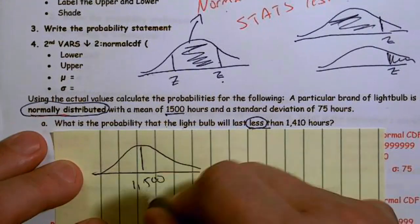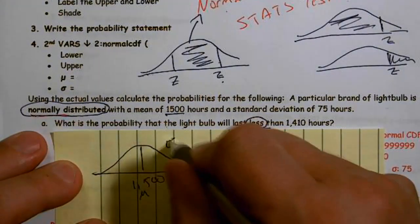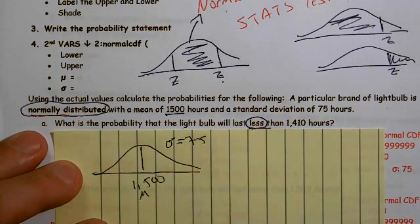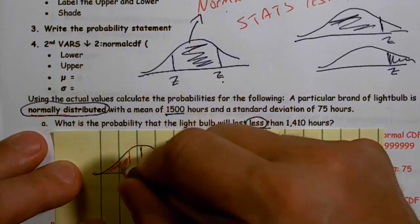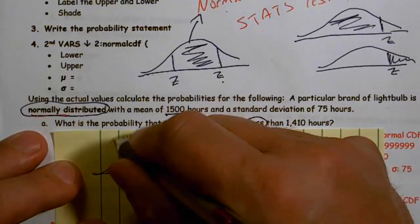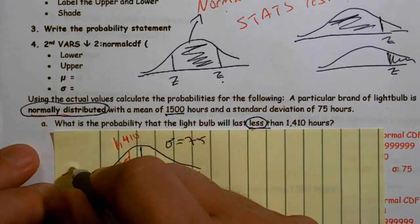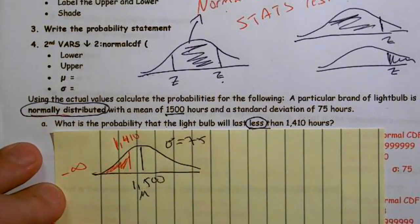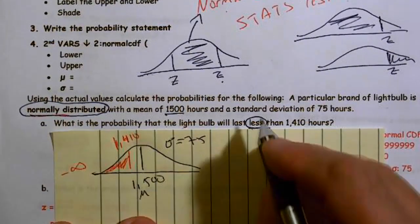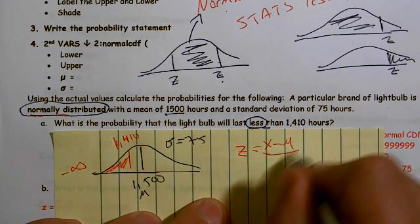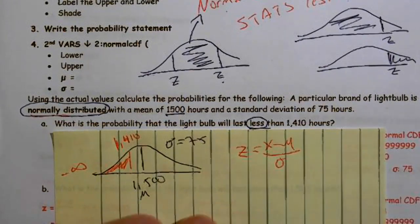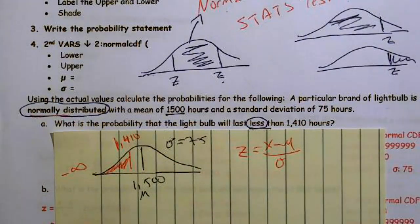So there's my mean. My standard deviation is 75. They want the probability that it's less than 1410, so I'm going to label that 1410 and shade to the left — remembering that this goes to negative infinity. Since they tell me it's normally distributed, I write down Z equals X minus mu over sigma as an organizational tool. It lets me know what I have, what I need, and what I'm looking to find.